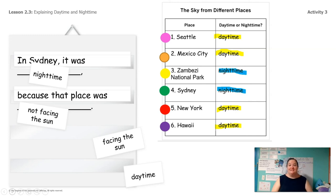I really encourage you guys to go through and make these sentences with each one of our places — Seattle, Mexico City, Zambezi, Sydney, New York, and Hawaii. You can even do other places that you know about.